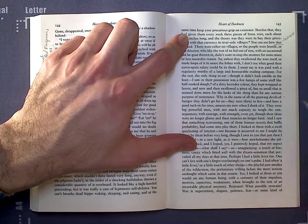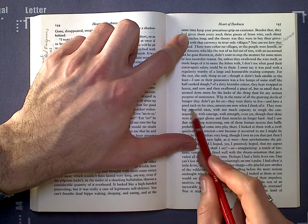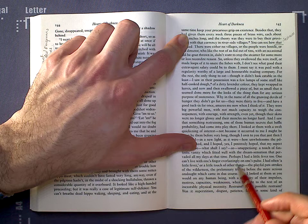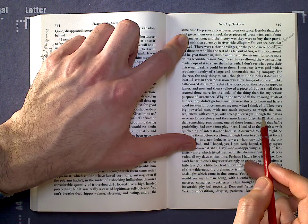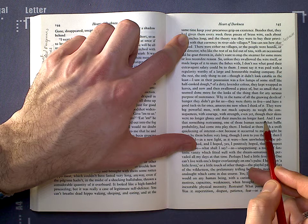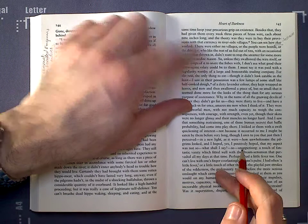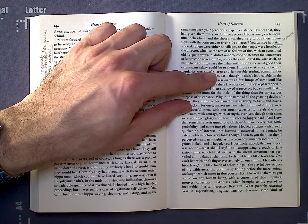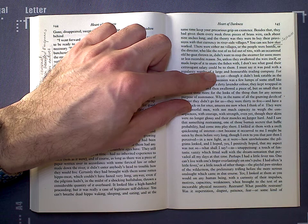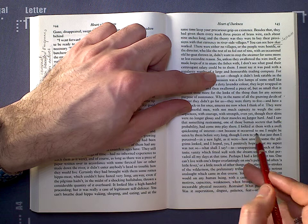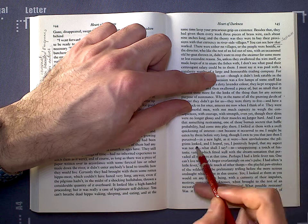And here's the revelation. Why in the name of all the gnawing devils of hunger, they didn't go for us, they were thirty to five, and have a good tuck in for once, amazes me now when I think of it. They were big, powerful men, with not much capacity to weigh the consequences with courage, with strength, even yet, though their skins were no longer glossy and their muscles no longer hard. And I saw that something restraining one of those human secrets that baffle probability had come into play here. So he's actually referencing humanity now, in the same way that a few passages ago, he was making that revelation that they were not inhuman. So he's now addressing that human secret. I looked at them with a swift quickening of interest, not because it occurred to me I might be eaten by them before very long, though I own to you that just then I perceived in a new light, as it were, how unwholesome the pilgrims looked.